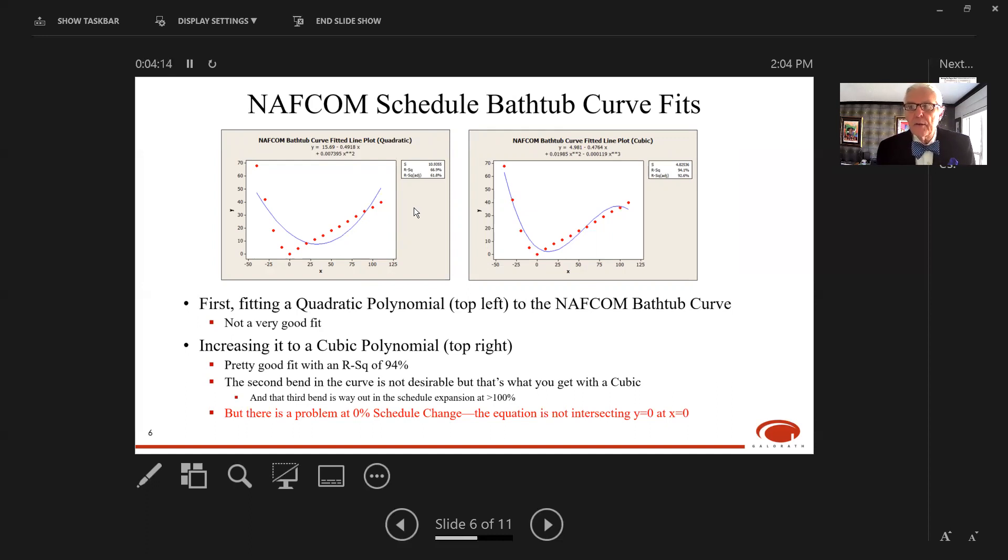There's another problem at zero percent schedule change. At zero percent, you're theoretically at the optimum schedule, the bottom of the curve. You would like your model to predict no cost impact, but we're getting a small cost impact. We're not getting Y equals zero at X equals zero, so we're going to have to worry about that.